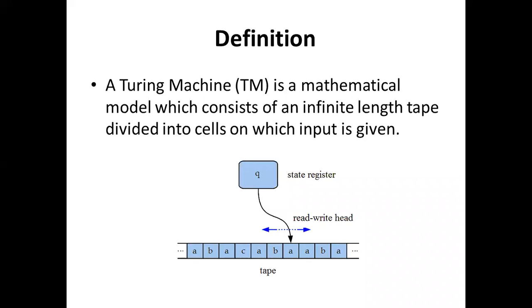Now we will describe the basic block diagram of the Turing machine. The Turing machine is a mathematical model which consists of an infinite tape, as described in this figure. This tape is divided into a number of cells on which input is given.